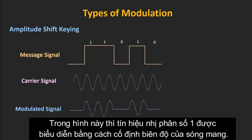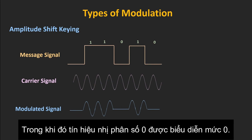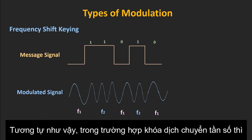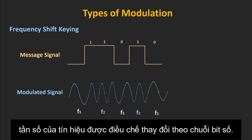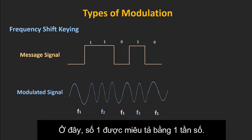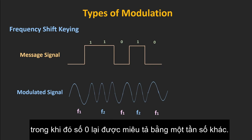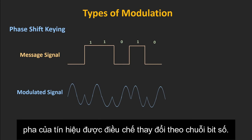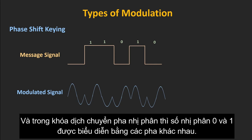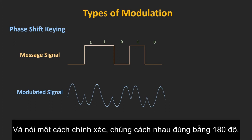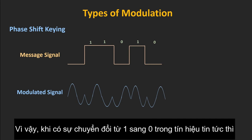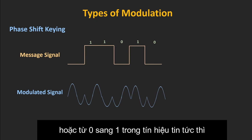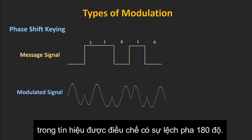In amplitude shift keying, binary 1 is represented by a fixed amplitude of the carrier wave, while binary 0 is represented by zero amplitude. In frequency shift keying, the frequency of the modulated signal changes according to the digital bit stream — binary 1 is represented by one frequency, while binary 0 is represented by a different frequency. In phase shift keying, the phase of the modulated signal is changed according to the digital bit stream. In binary phase shift keying, binary 1 and 0 are represented by different phases — 180 degrees apart. When there is a transition from 1 to 0 or 0 to 1 in the message signal, there is a 180-degree phase shift in the modulated signal.